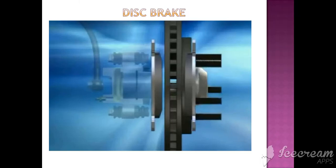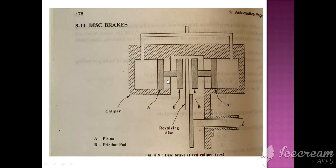In the color picture, you can see the ventilated disc here. Here you can see the oil comes from here. The oil pushes this piston — because the oil is compressed, it moves the piston. Here the friction pad comes in contact with the piston.